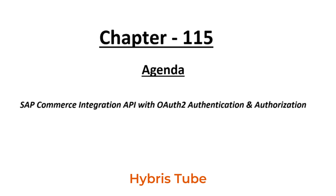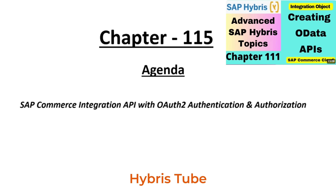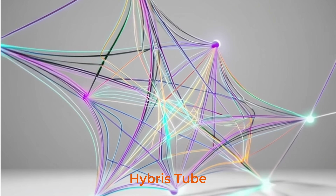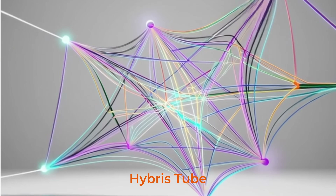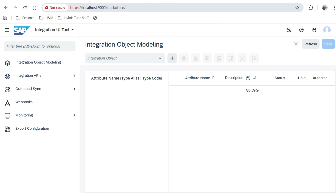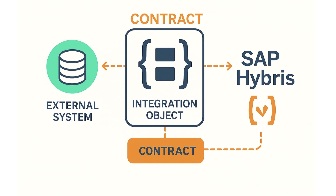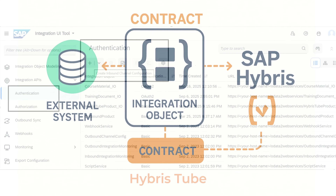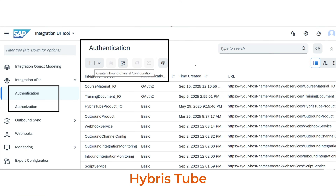Hello friends, welcome to the 115th session of SAP Commerce tutorial. In our 111th chapter, we learned about the basics of the Hybris integration module. We also reviewed the integration UI tool and we created our first integration object. We learned that using an inbound channel configuration, which is also called as ICC, we can authenticate incoming requests to the integration API.